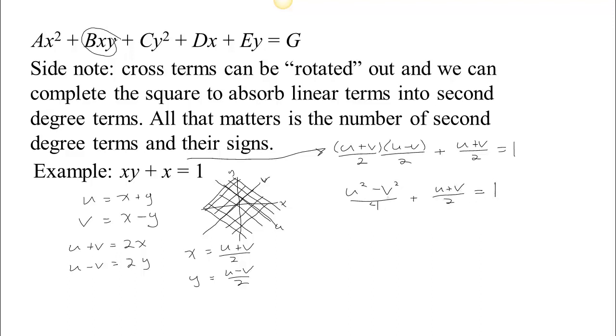I think what I'll do is I'll multiply both sides through by 4 to clear out the fractions. u squared minus v squared. If I multiply this by 4, I get a 2u and a 2v, and multiplying the right by 4, I get 4. Now we recognize this is a hyperbola.